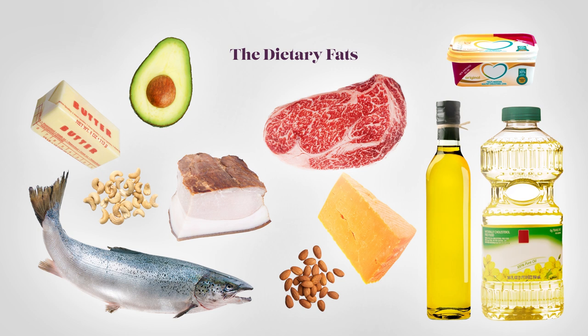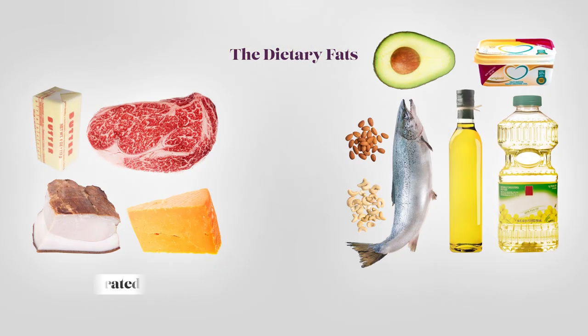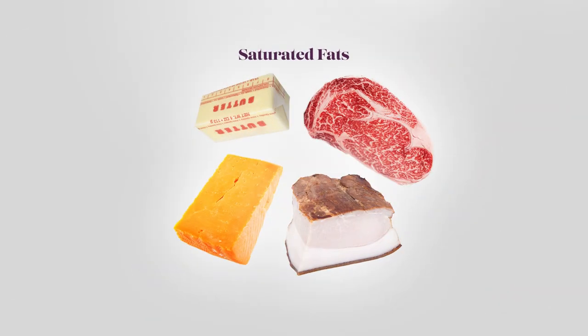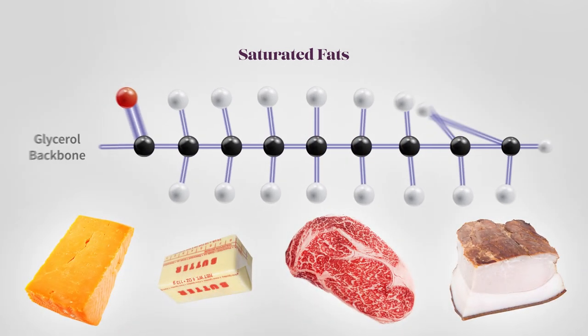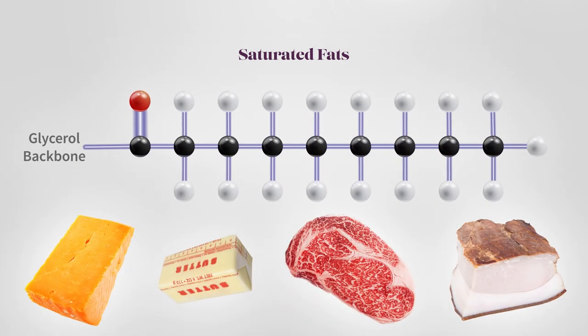But once again, the pendulum threatens to swing too far in the opposite direction. Dietary fats can be divided into two families: the saturated and the unsaturated fats. Saturated fats get their name from the fact that their fatty acids are saturated with hydrogen molecules. This means that they can lie flat and pack together densely, so that saturated fats tend to be solids at room temperature. Animal fats like lard and butter are good examples.